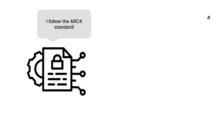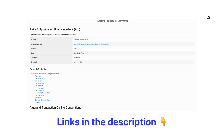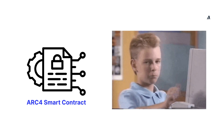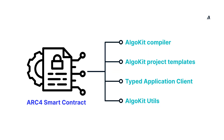If a smart contract follows the ARC4 standard, then we call it an ARC4 smart contract, or an ARC4 application. I'll leave a link to the ARC4 standard in the description if you would like to learn more. In this video series, we'll always work with an ARC4 smart contract as it is a recommended convention to follow. Also, the ARC4 smart contract is better supported by other Algorand developer tools and makes your life much easier.